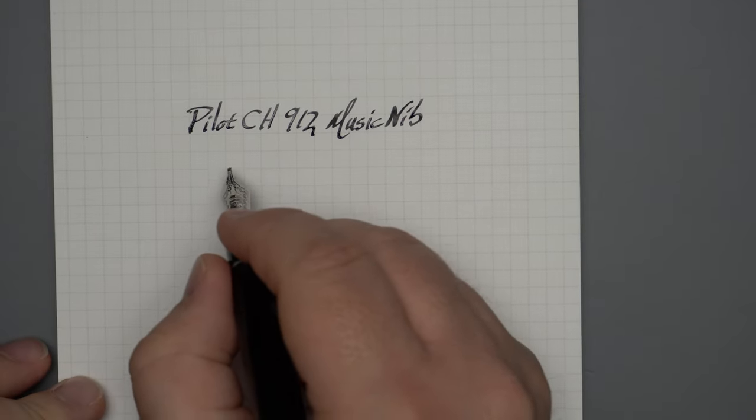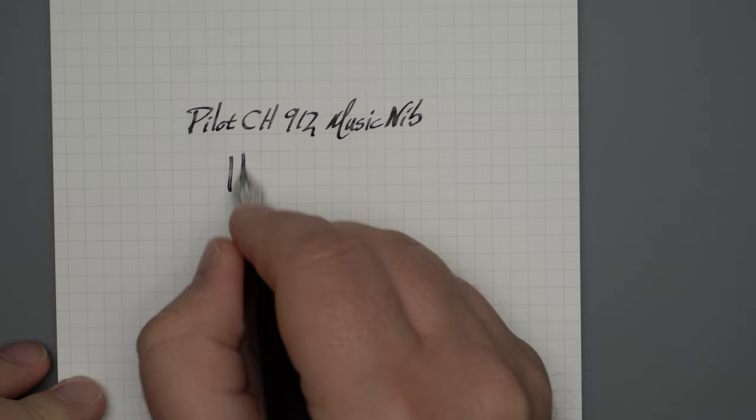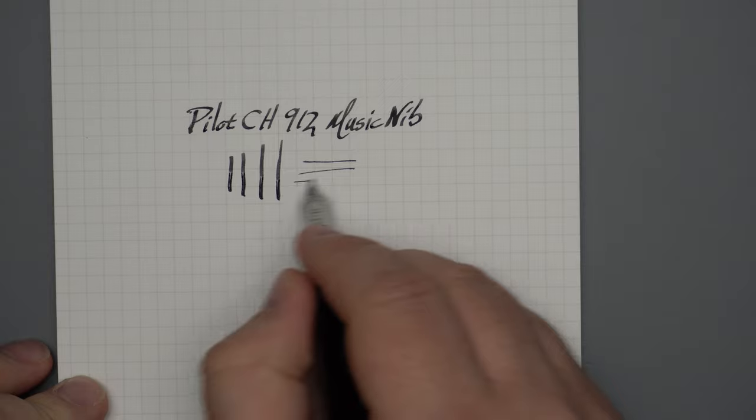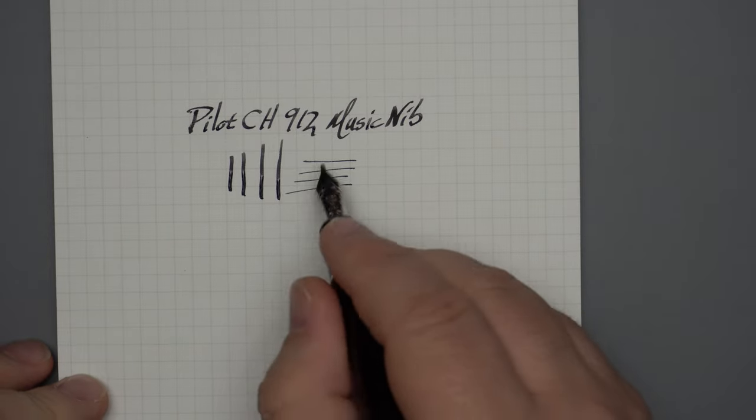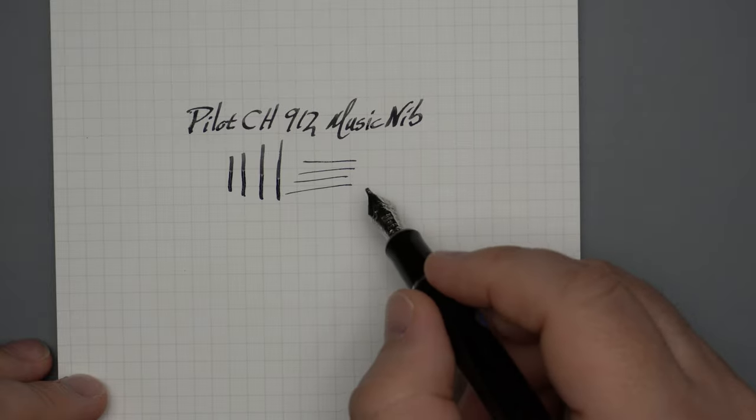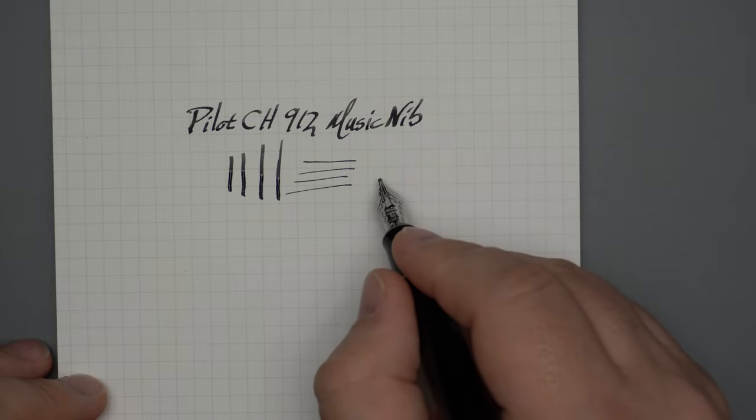And when you do a vertical stroke, you can see it's quite wide, while keeping your horizontal strokes very thin. So this is not really a flex nib. There are some flex music nibs out there, but that really isn't what's going on here.